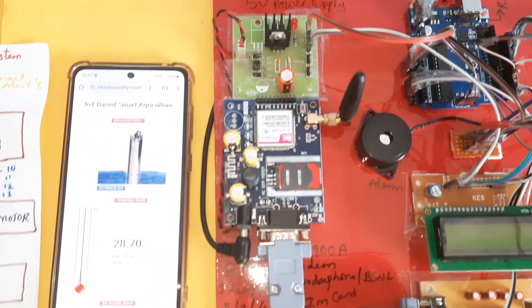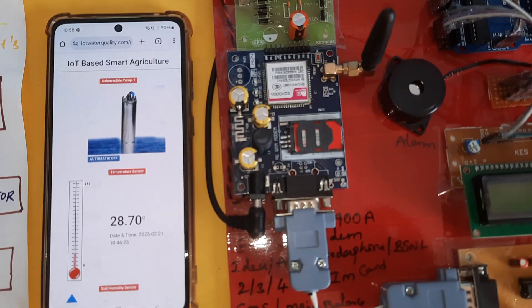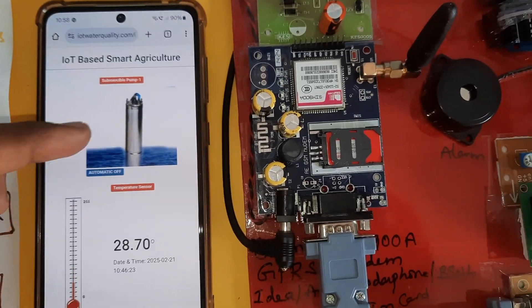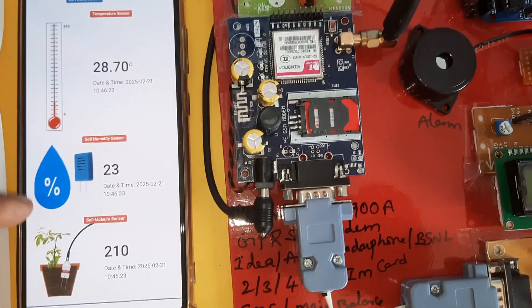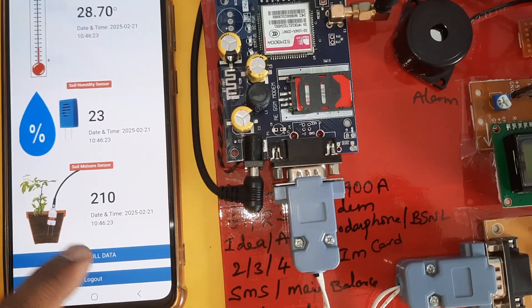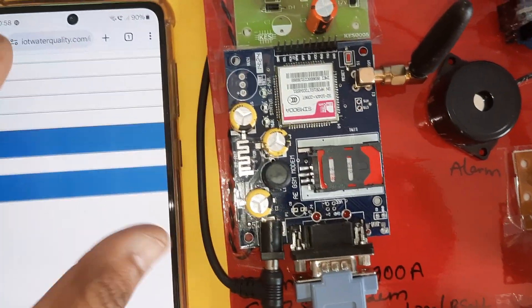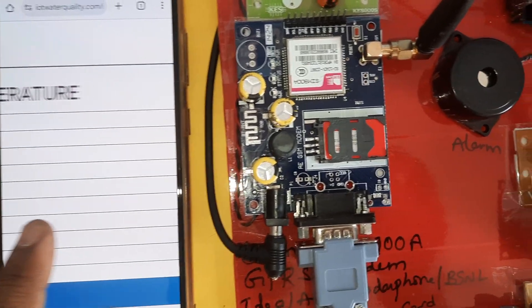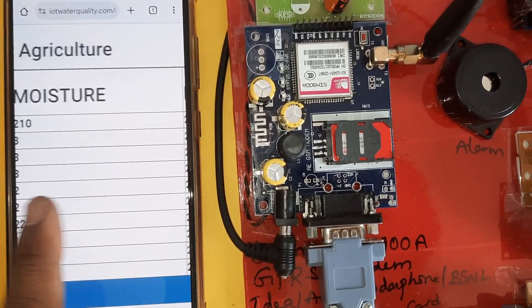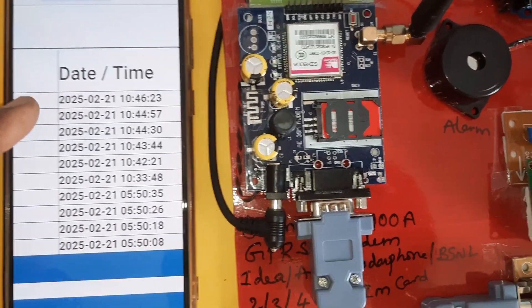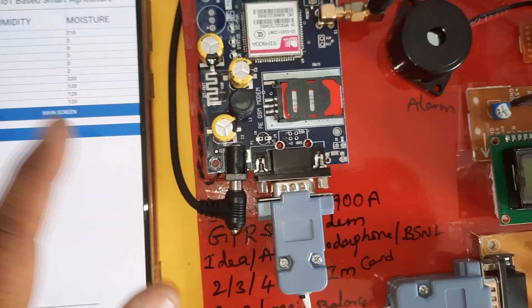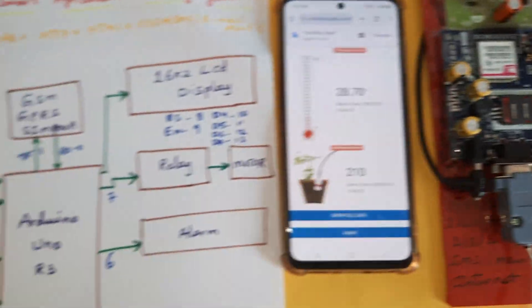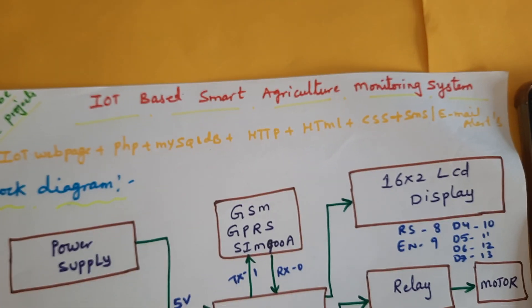IoT-based smart agricultural monitoring system. The system includes automatic and manual motor pump on/off control, temperature sensor, humidity sensor, moisture sensor, and date and time display. Temperature data, humidity data, moisture sensor data, and date and time are shown on screen. Let us look at the block diagram of the IoT-based smart agricultural monitoring system.